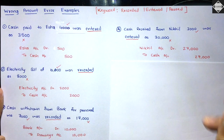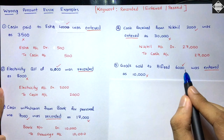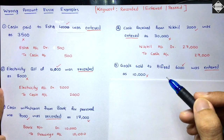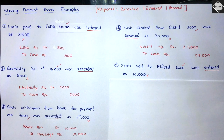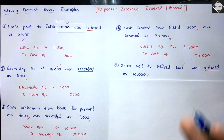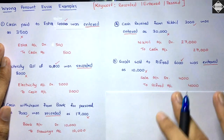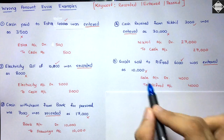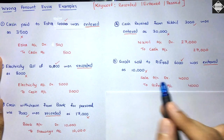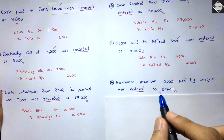Example 5: Goods sold to Alfred six thousand was entered as ten thousand. The correct entry is Alfred account debit to sales. More amount has been recorded — the differential is four thousand. To reverse: sales account debit to Alfred account, four thousand. Sales has a credit balance, so to reverse it you debit sales. Alfred is a debtor with debit balance, so to reverse you credit Alfred.